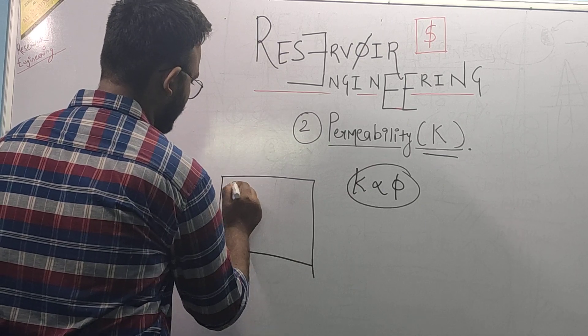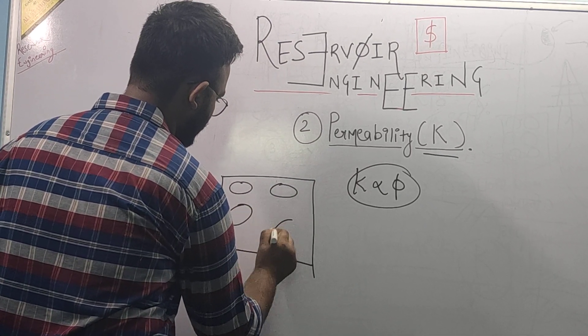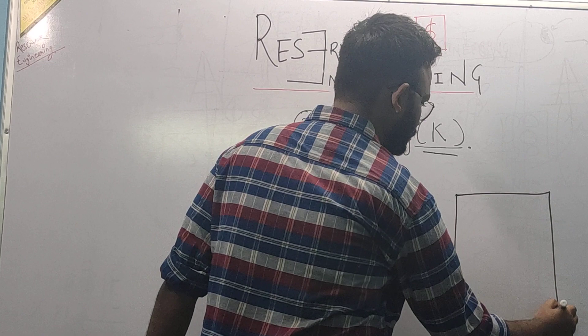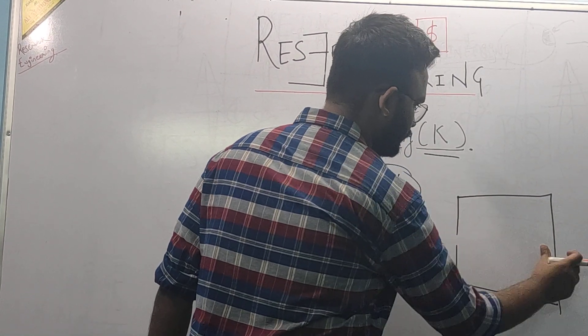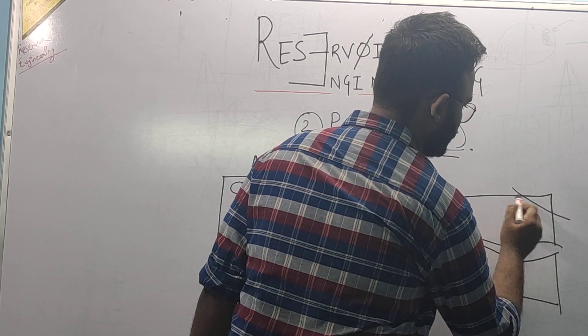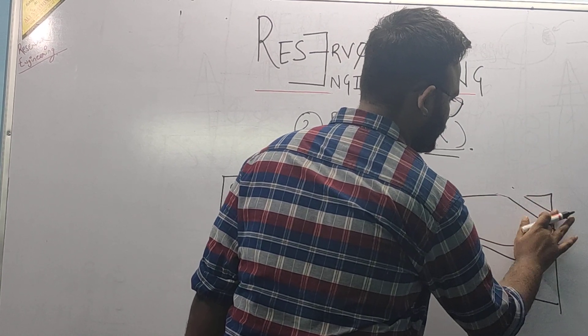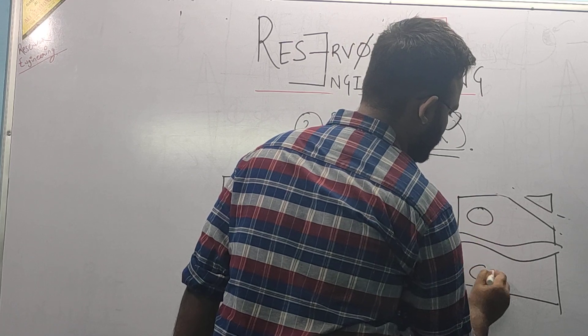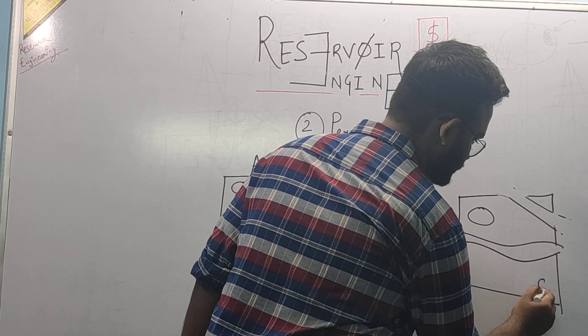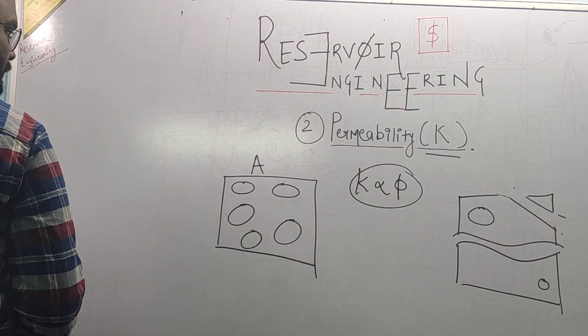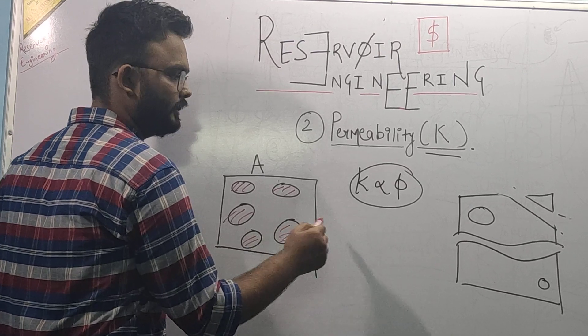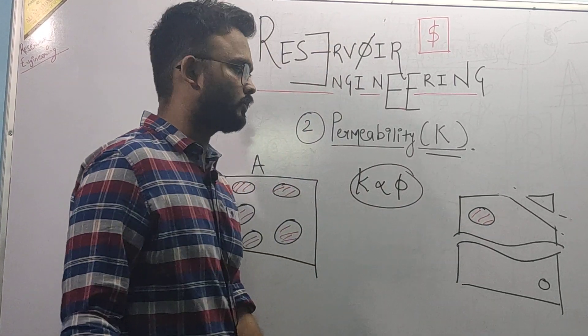Permeability is, if I give you an example, this is a rock and I call it rock A. And this is another rock. The portion in red is empty or maybe covered with some fluid and it's not rocky.